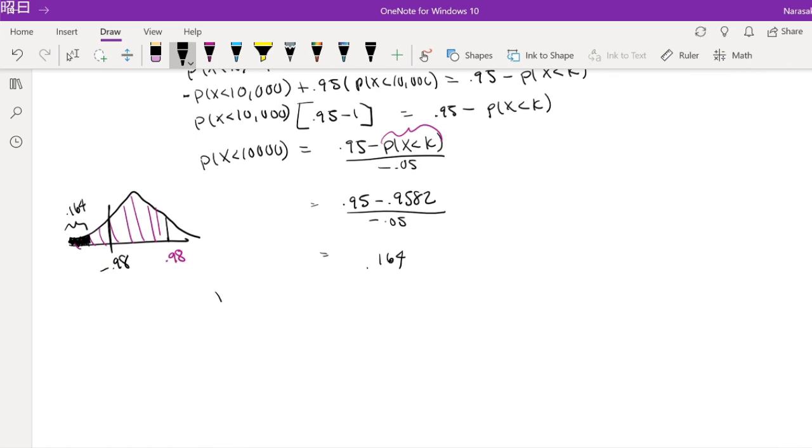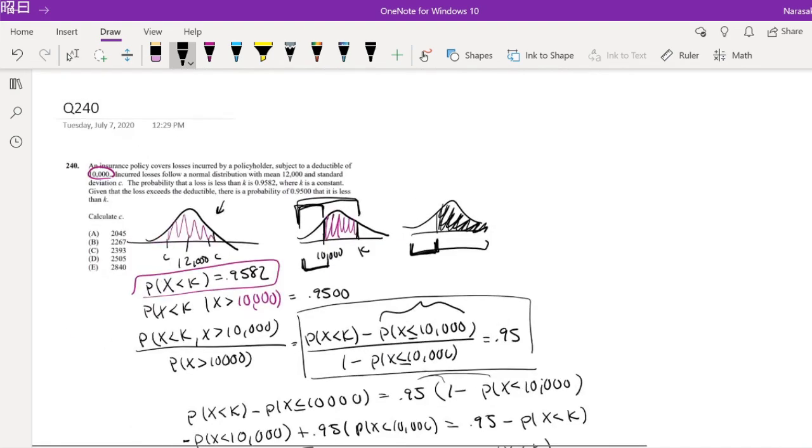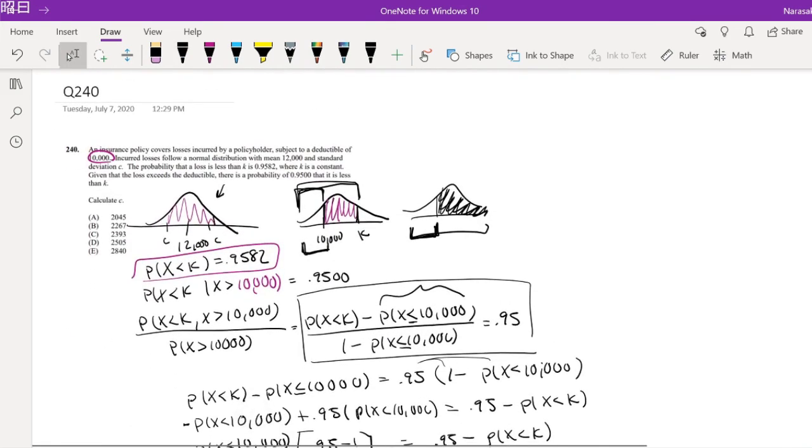So when I normalize it, this will become Z. Probability that Z is less than 10,000 minus 12,000 divided by c is equal to negative 0.98. So solving for c, we get c is equal to 2040.8, which is our answer A.